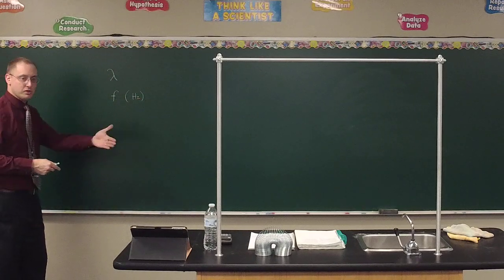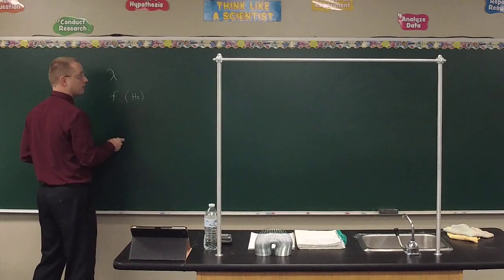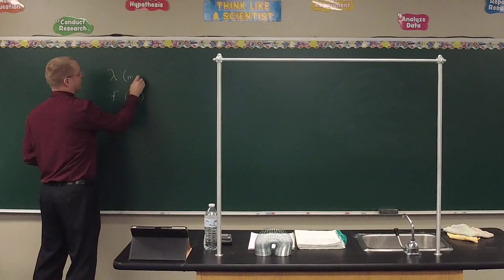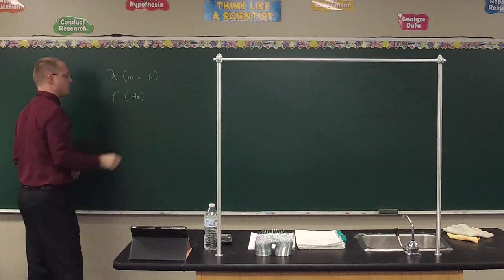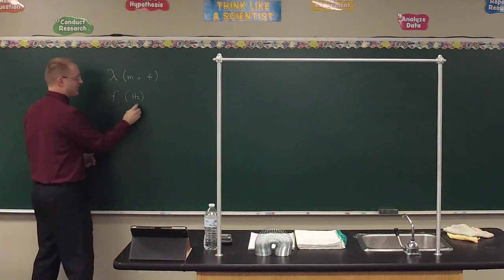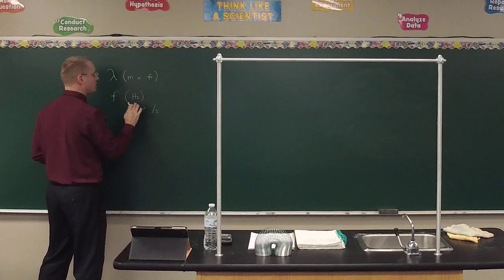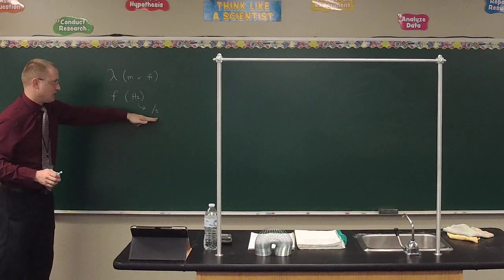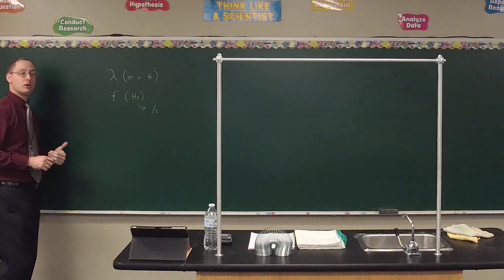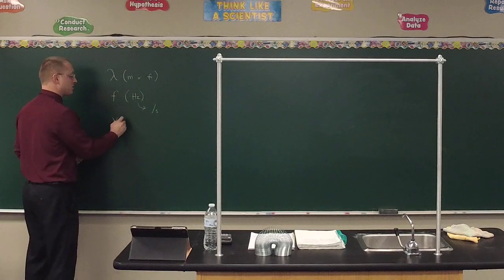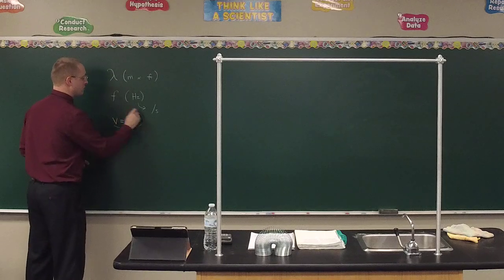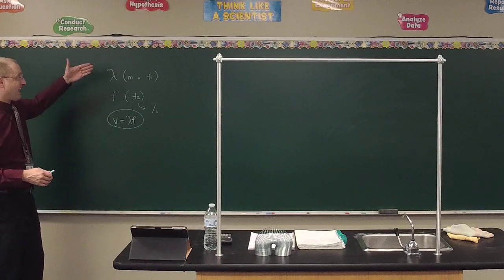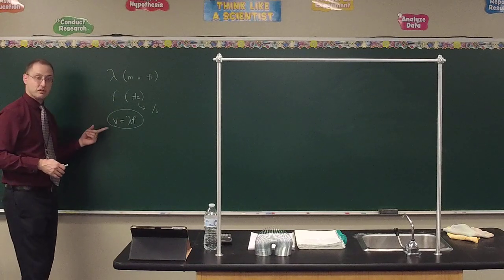Hertz is the same thing as per second. Wavelength times frequency gives meters times per second, or meters per second — that is the wave speed. We represent it with the letter V, and the equation is V equals lambda F. The bigger the wavelength and the higher the frequency, the faster the wave's speed.